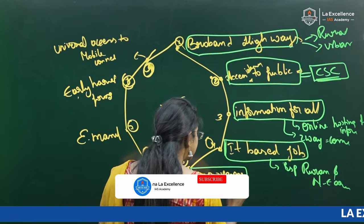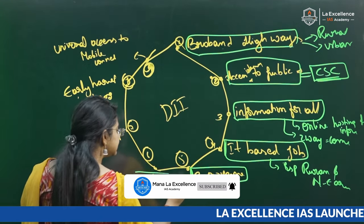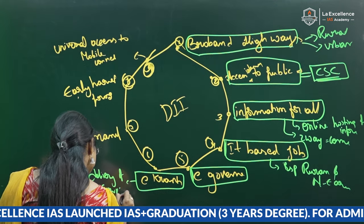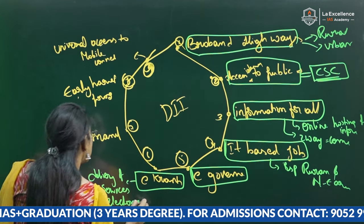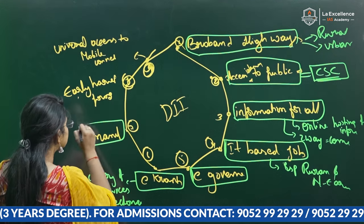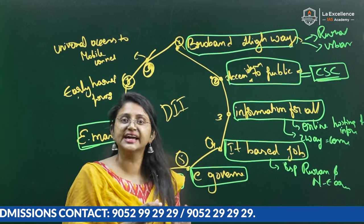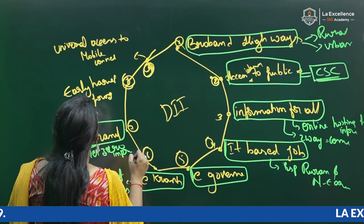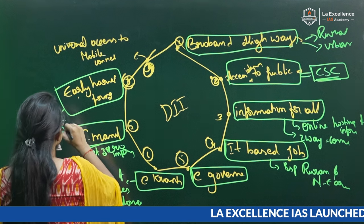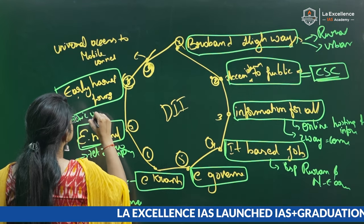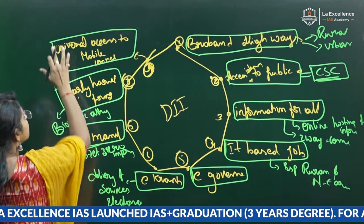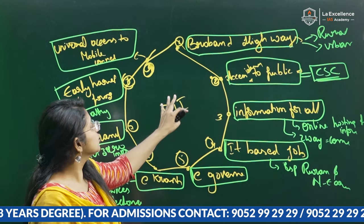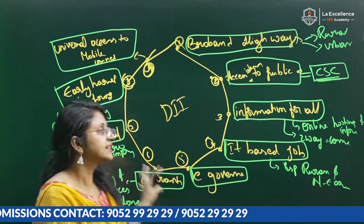The fifth pillar is e-governance, which facilitates governance in electronic or digital format. The sixth pillar is e-Kranti, which is the delivery of services electronically. The seventh pillar is e-manufacturing, which includes manufacturing of electronic items in India itself, aiming for net zero imports. The eighth pillar is early harvest programs, which use biometric attendances. And the ninth pillar is universal access to mobile connections, which enables increased network penetration across the country.